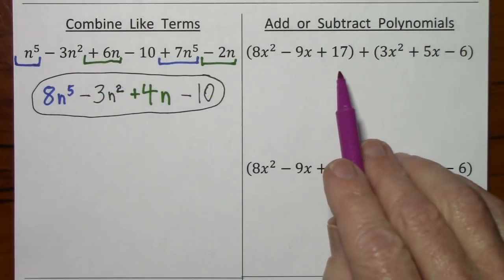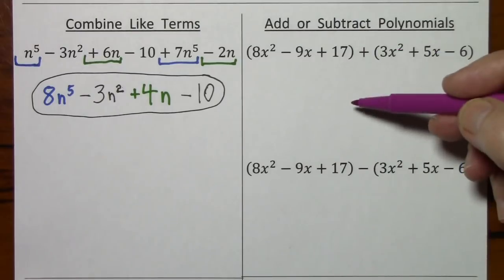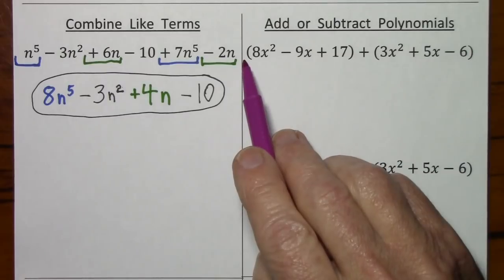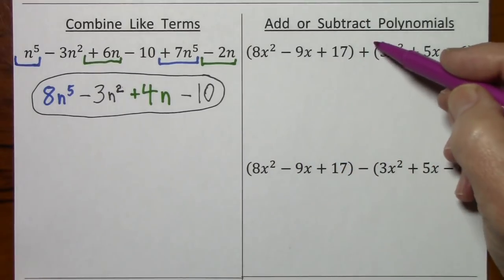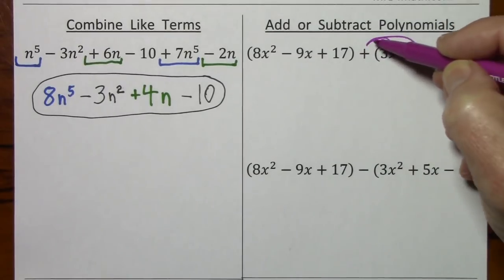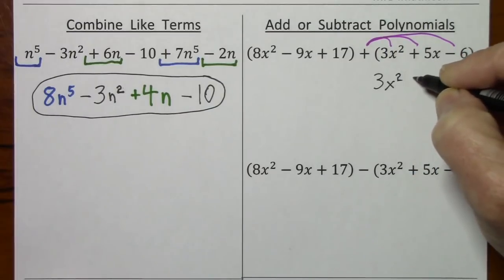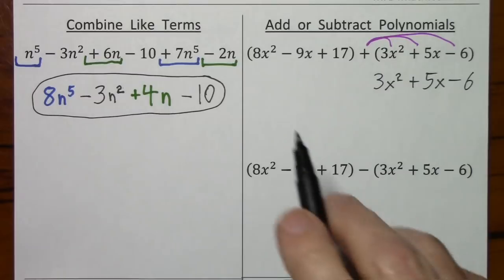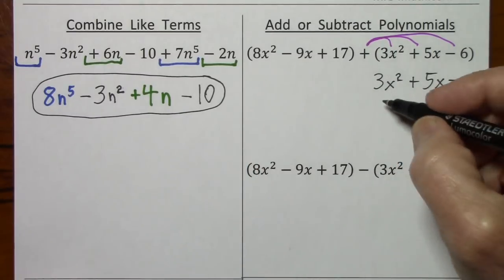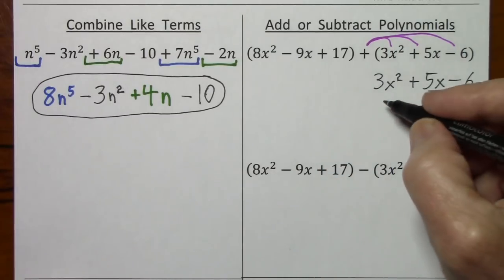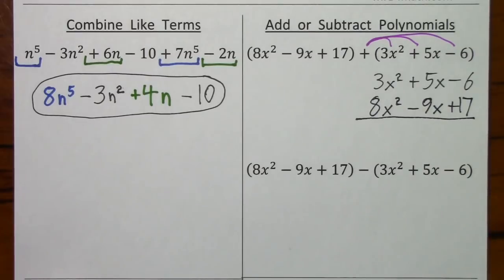To add or subtract these two polynomials, we'll have to get rid of the parentheses. This first set of parentheses we can basically just drop because there's really nothing in front — you could say there's a positive one, but if you were to distribute that to each term, nothing would change. It's pretty much the same here. So we simply have 3x squared. I'm going to stack these terms underneath the like terms to make it easier to combine them, just rewriting this underneath the matching like term. Draw a line and let's see what's left.